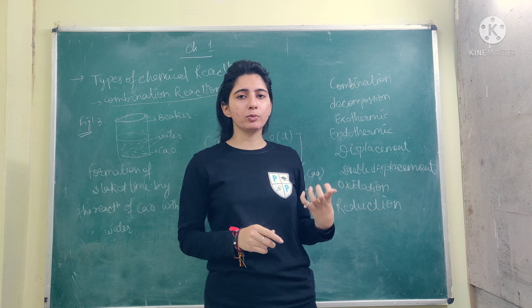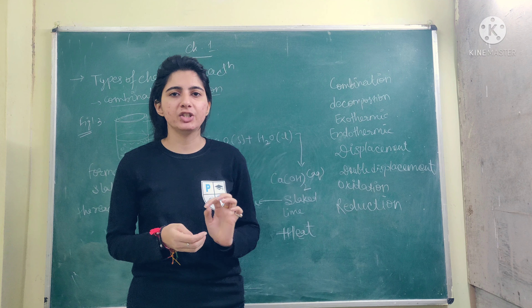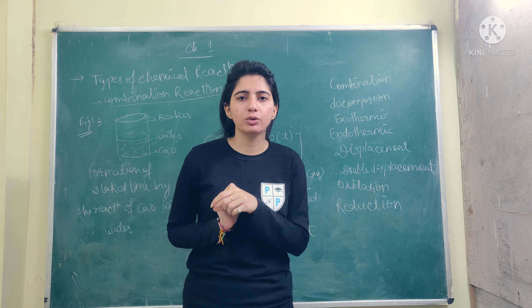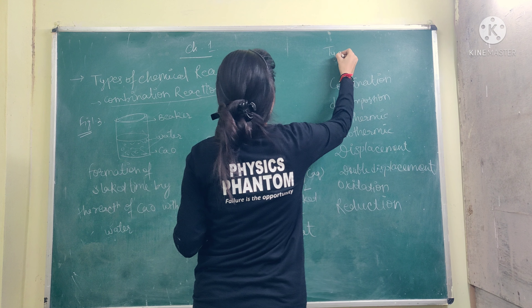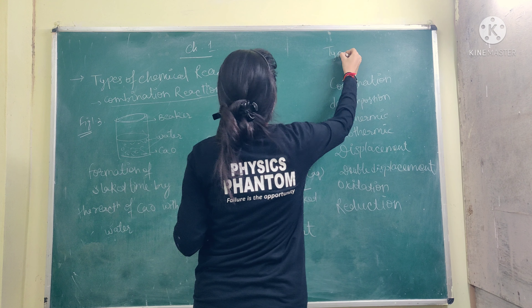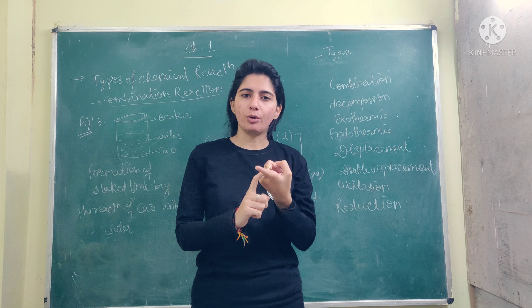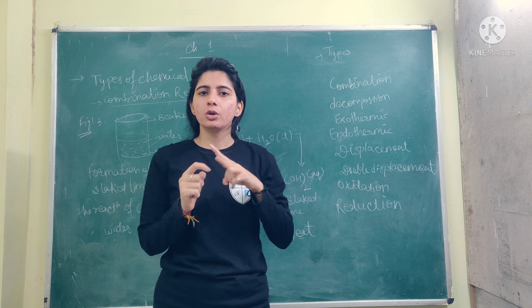Today I will tell you how many types of reactions we have, how we divide them, and what their importance is — with examples I will explain each and everything. You have a total of these types: first is combination, second is decomposition, third is exothermic, number four is endothermic, then displacement, double displacement, and oxidation and reduction. There are total six types.